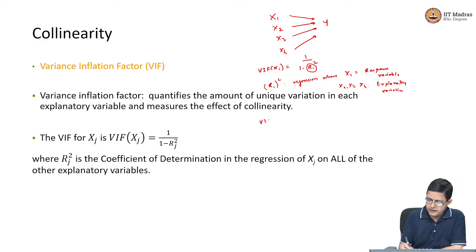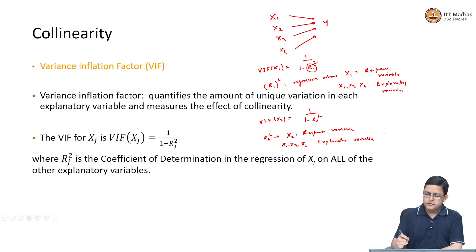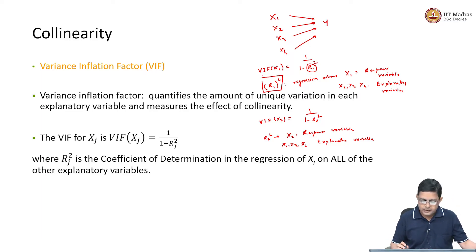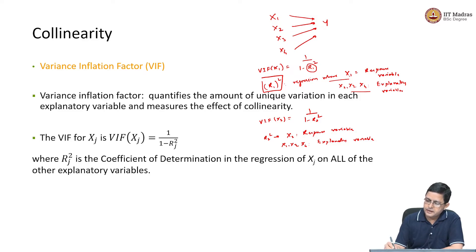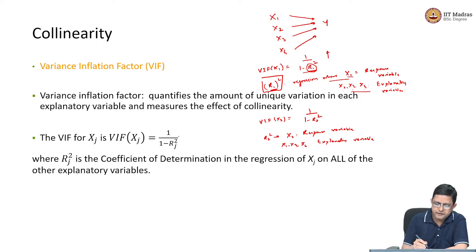Similarly, when we calculate VIF of x2, it is 1 over (1 minus R2²), where R2² comes from the regression where x2 is the response variable and x1, x3, x4 are the explanatory variables. Now, R² will be large if that regression is significant — meaning explanatory variable x1 is fairly correlated with x2, x3, x4. If R² is large, VIF will be large. This is how you quantify the variance inflation factor.